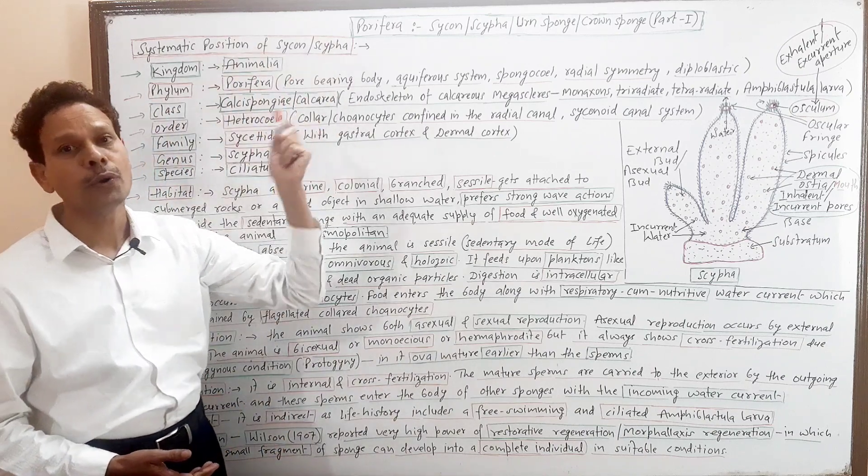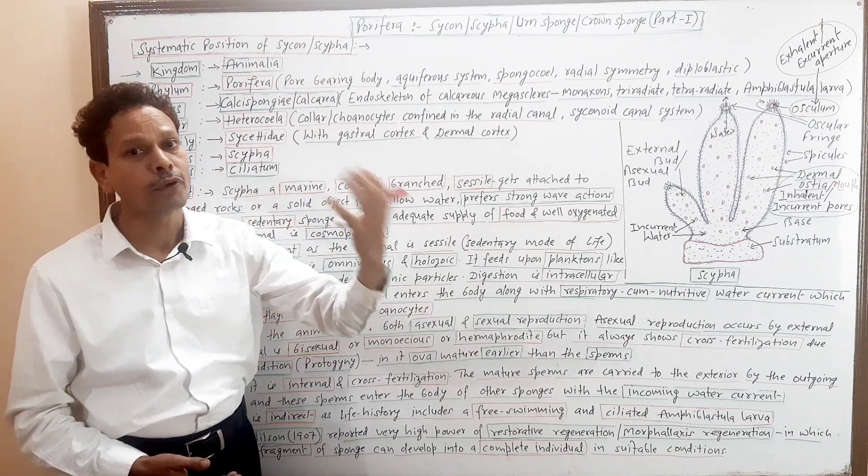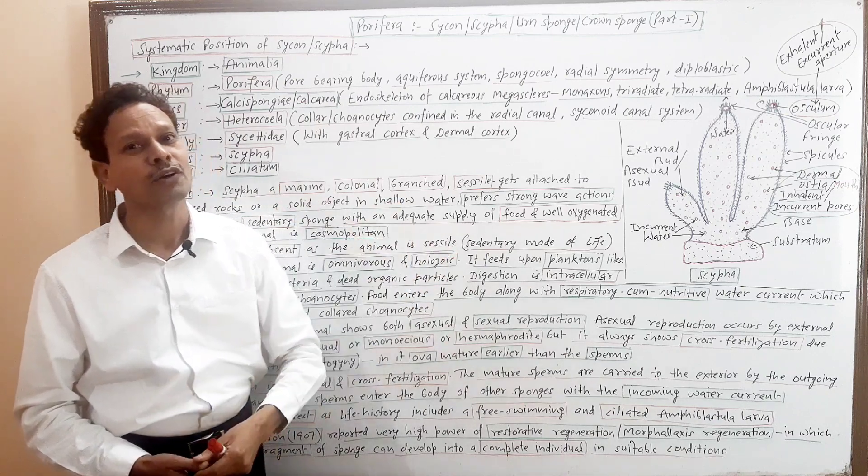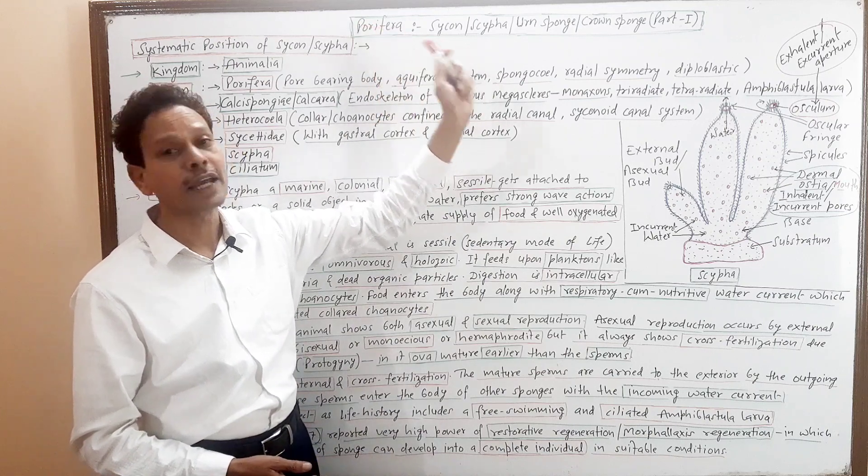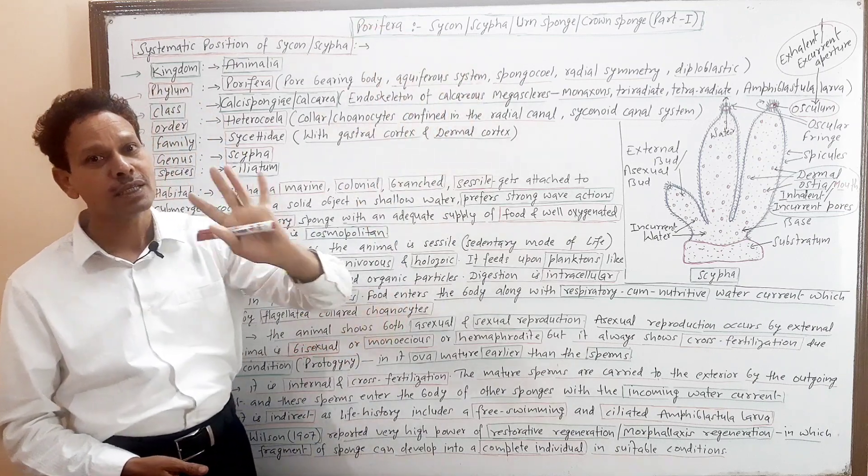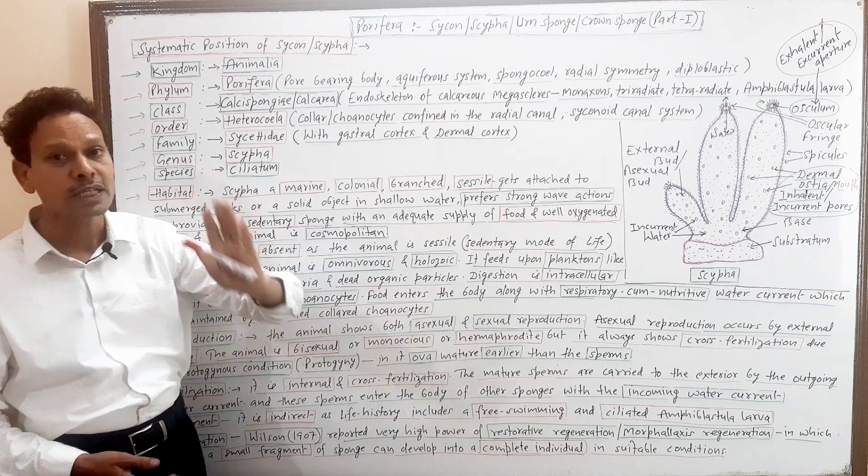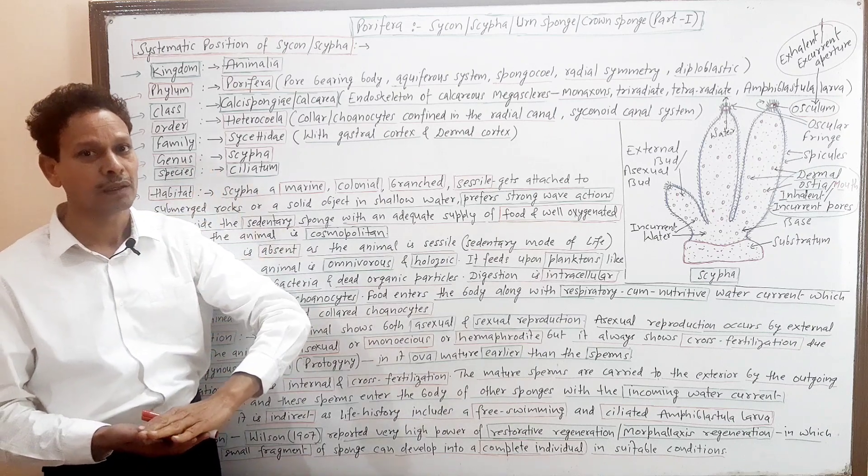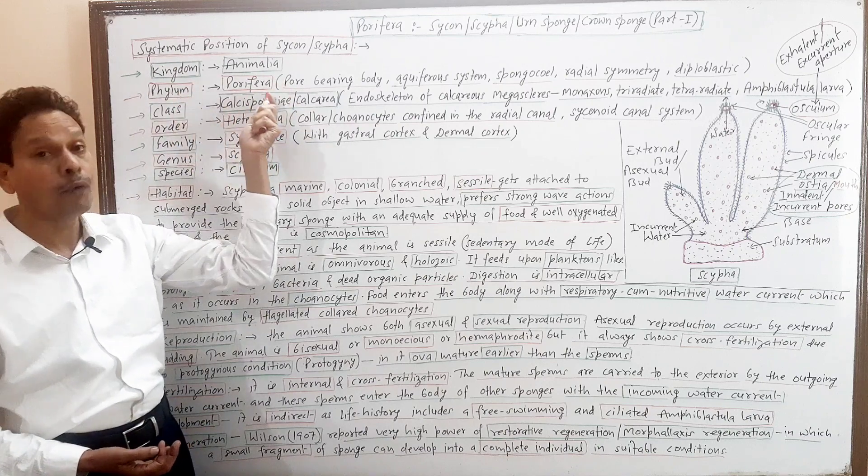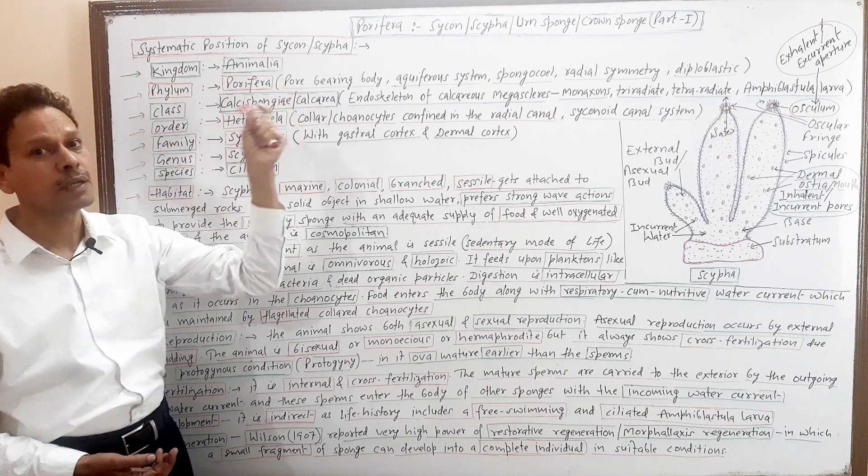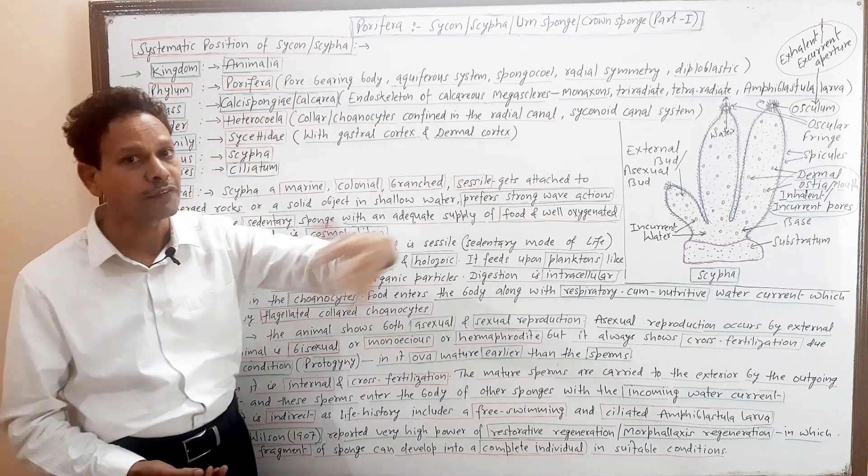We are covering BSC students' final exam topics. First, a short type question for 3-4 marks: systematic position of phylum Porifera type Sycon Scypha. Sycon Scypha's systematic position - we have discussed all characteristic features.